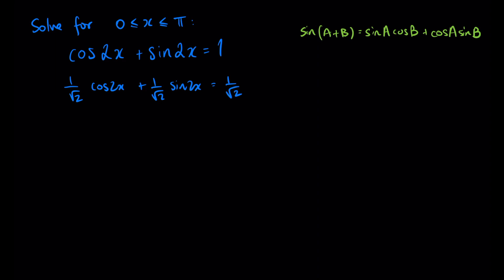The reason we do this is because we know that the cosine of π on 4 equals the sine of π on 4 equals 1 on root 2.